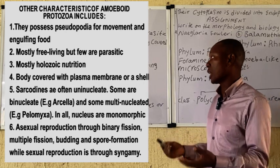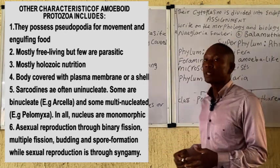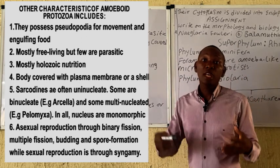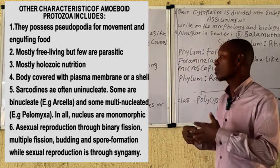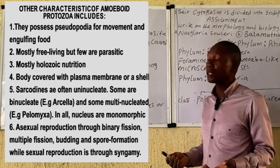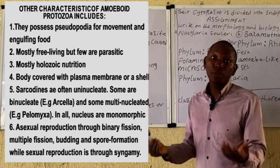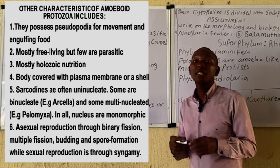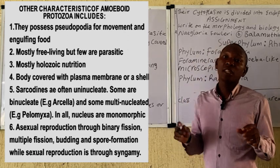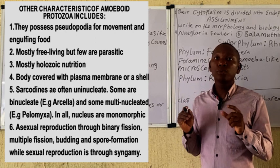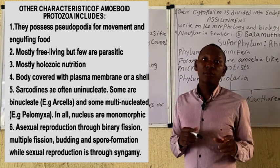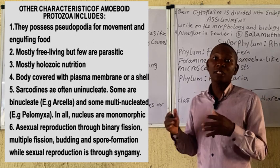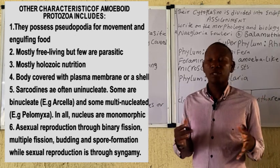Other forms of reproduction are also involved. They can be uninucleate — possessing one nucleus — binucleate with two nuclei, or possess multiple nuclei in some cases. Take note that even if they possess multiple nuclei, the nuclei are of one type, so they are monomorphic in terms of nucleus type, unlike the Ciliophora which show dimorphism — having nuclei of various different types.